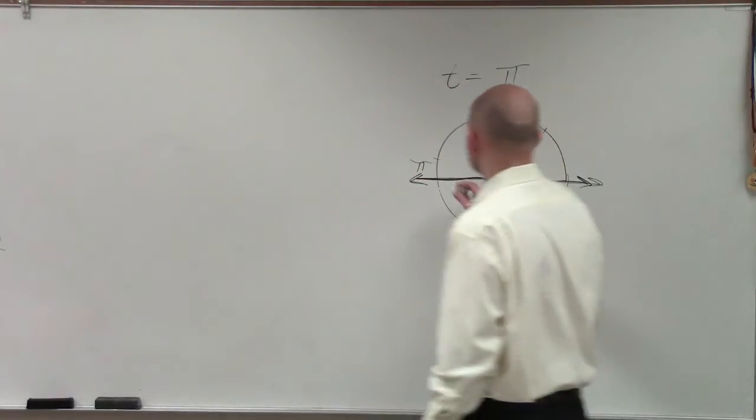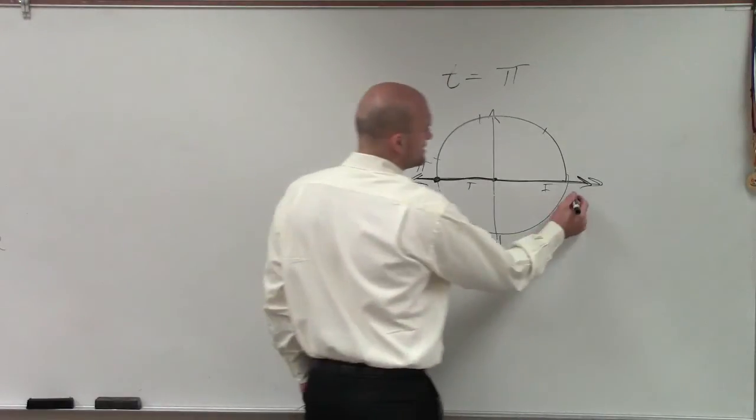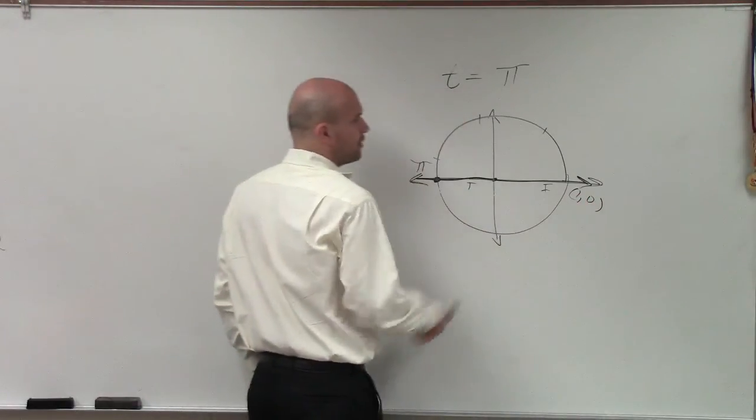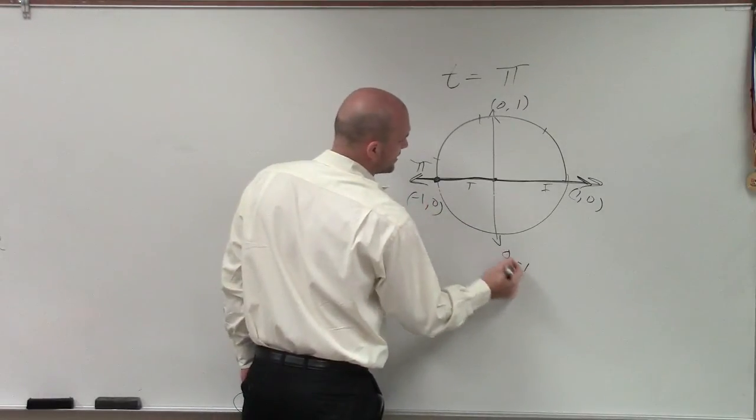So now I just need to determine, well, what is this point then on the unit circle? Well, remember, our easy points: this point would be (1, 0), (0, 1), (-1, 0), and (0, -1).